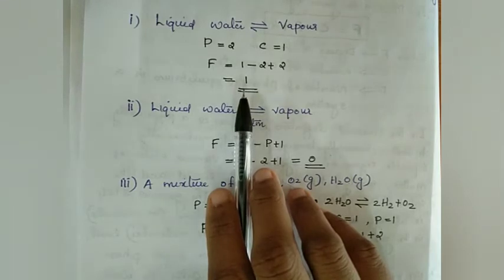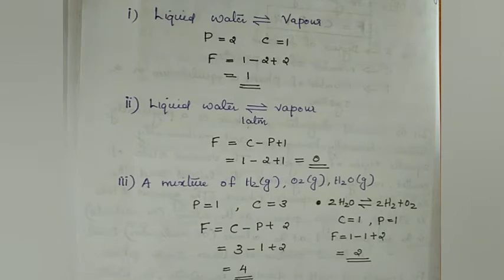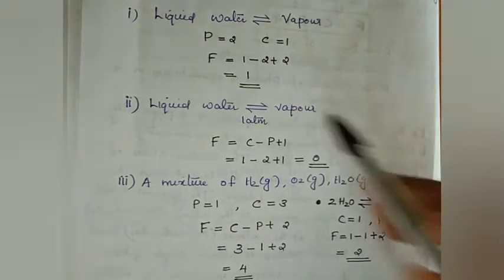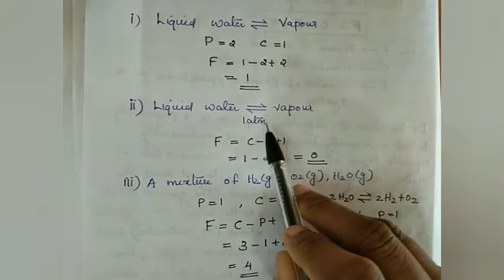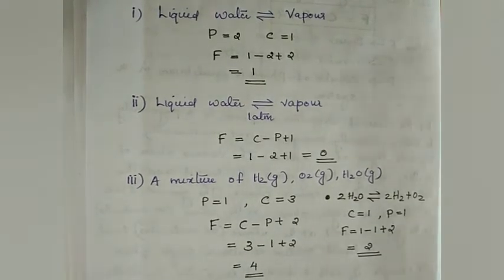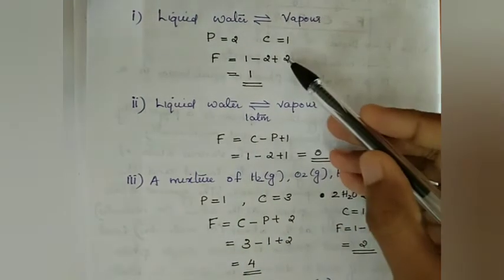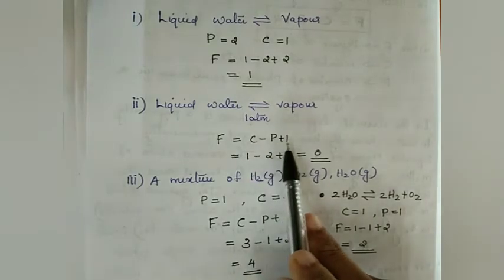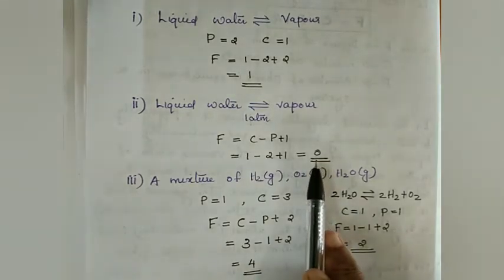The degree of freedom equals 1, which means the system is univariant — we can only change temperature or pressure of this system. In the next example, liquid water and water vapour are in equilibrium with each other at one atmospheric pressure. Here, pressure is constant, which means one variable is already fixed. So the phase rule becomes F = C - P + 1, because one variable (pressure) is already constant. That gives 1 - 2 + 1 = 0. The degree of freedom of this system is 0.